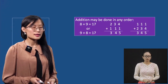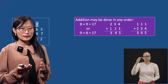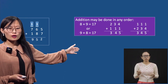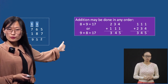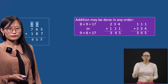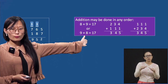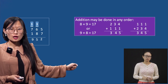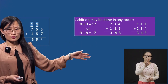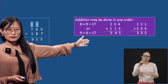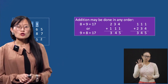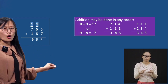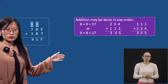A reminder: addition can be done in any order. Eight plus nine is 17, or nine plus eight is 17 — you get the same answer whether you add from left or right. For example, 234 plus 111: four plus one is five, three plus one is four, two plus one is three. Whether added upward or downward, you get the same answer.